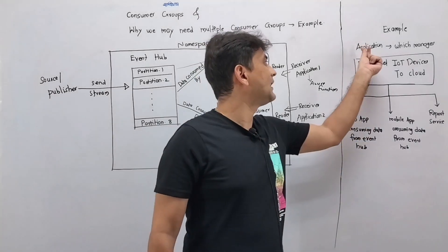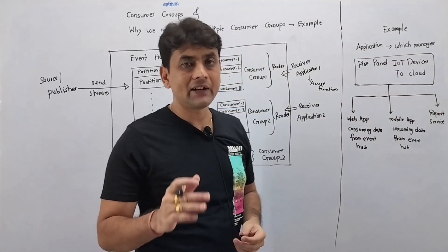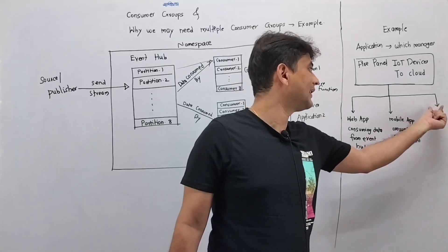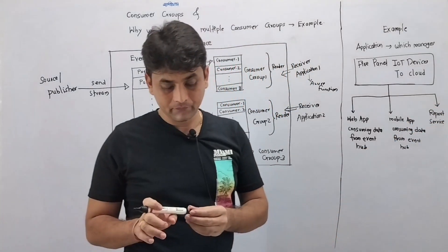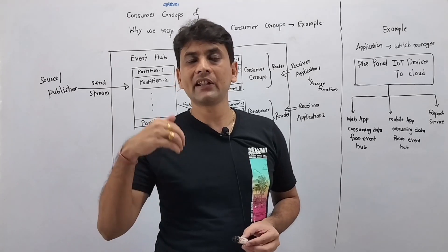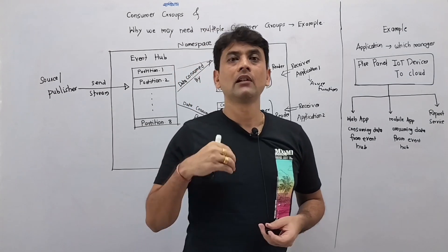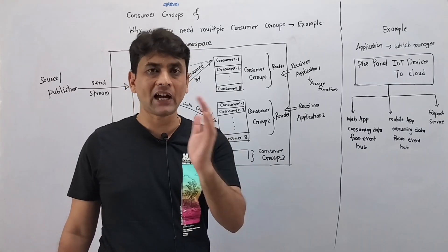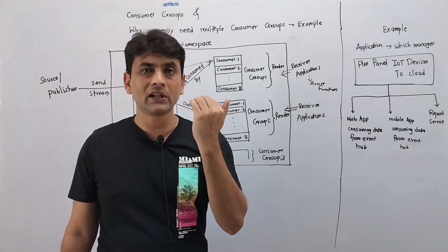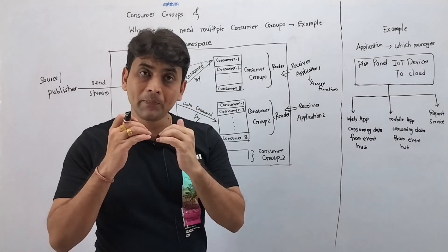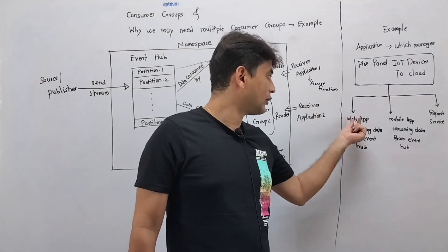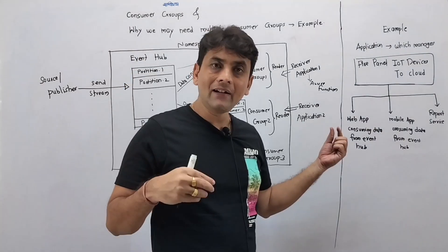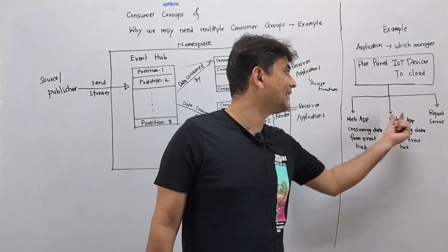Imagine you are working on an application which manages fire panel IoT devices to the cloud. Your application has a web app, a mobile app, and a report service. Those fire panels are installed in buildings, schools, or hospitals, and whenever smoke or fire is detected those panels send notifications or events to the IoT app. Via the IoT app those events are sent to the event app, and then your web app, mobile app, and report service all consume those events from the event app to display fire or smoke detection information.